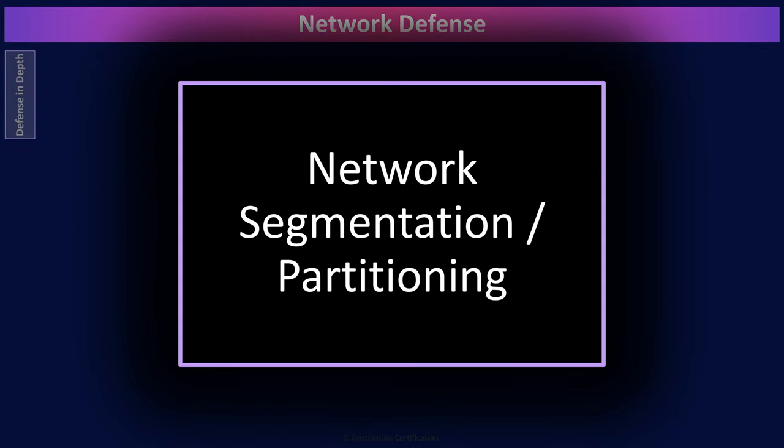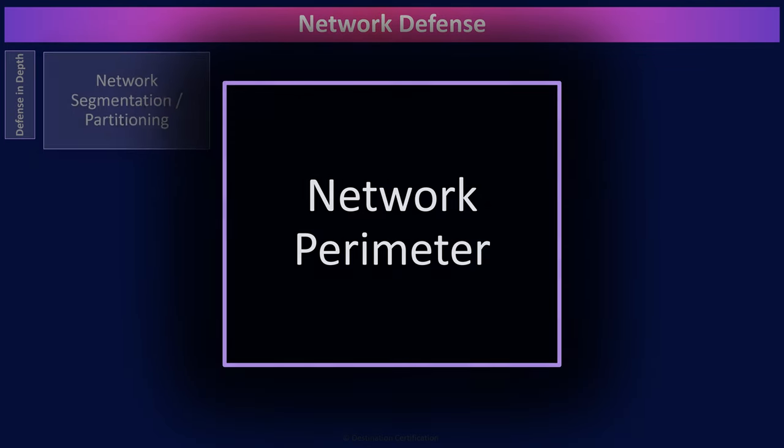Network segmentation, also referred to as partitioning, is the idea that we break our networks up into pieces — segments or partitions — and then we can control the flow of traffic between these segments. We can create different segments and apply differing levels of controls. One segment could be our guest network that we just allow out to the internet, with very limited controls in place. Another segment could contain our backend, high-value databases, with extensive controls in place to prevent, detect, and correct unauthorized access.